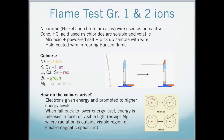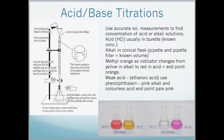We might also be asked to explain how the colors arise. This happens because electrons are given energy, so they are promoted to a higher energy level — this is known as absorption. When the electron falls back down to the lower energy level, energy is released in the form of visible light. There is one exception, which is magnesium, where the radiation that is released is outside the visible region of the electromagnetic spectrum.